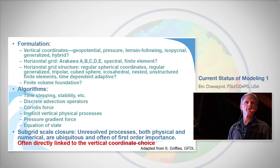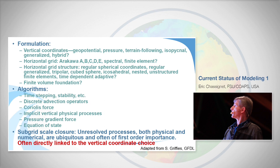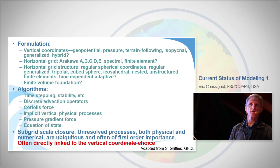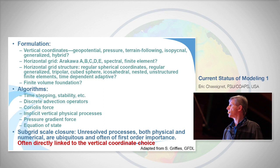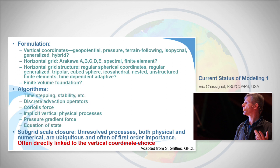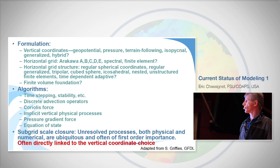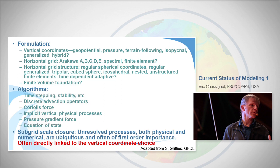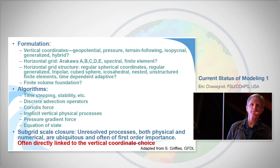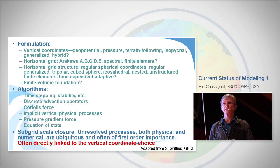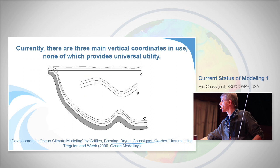Vertical coordinates — I'll spend more time on this — have a strong impact on how the ocean interior is represented. Horizontal grid: you can discretize using spectral, finite elements, regular, generalized, tripolar, or cubed-sphere grids — many options, and you have to decide which is best for the problem. The algorithm must be stable, with appropriate time-stepping, accuracy, implicit or explicit treatment, pressure gradient force, and equation of state. And the subgrid-scale closure matters: everything below the scales of your model must be parameterized, and as Bailey showed, that has a strong impact on the solution.